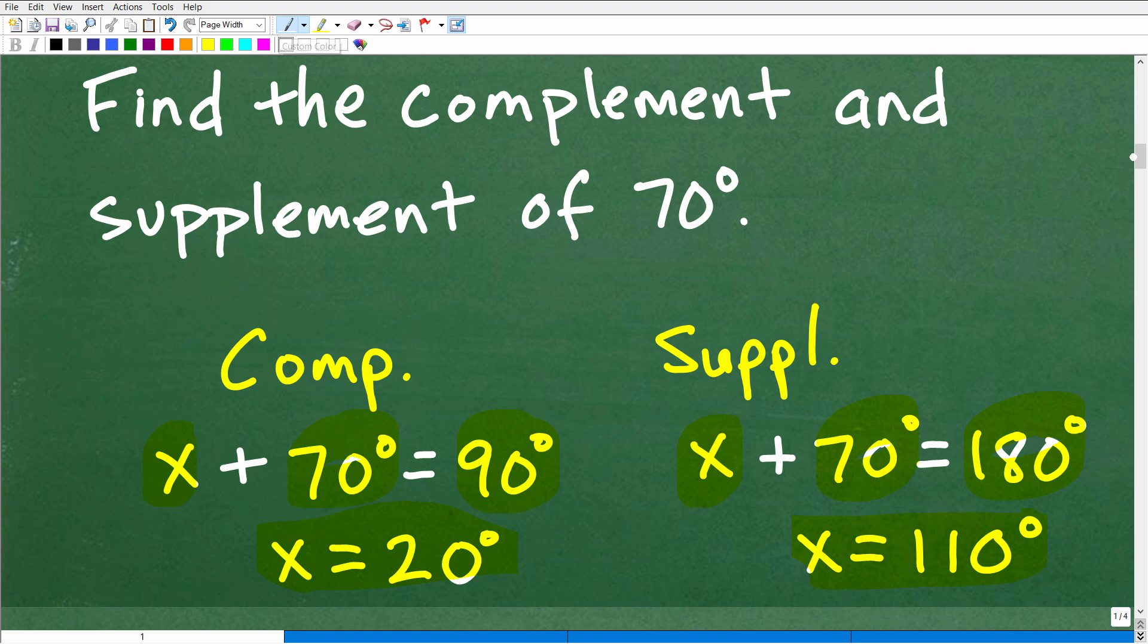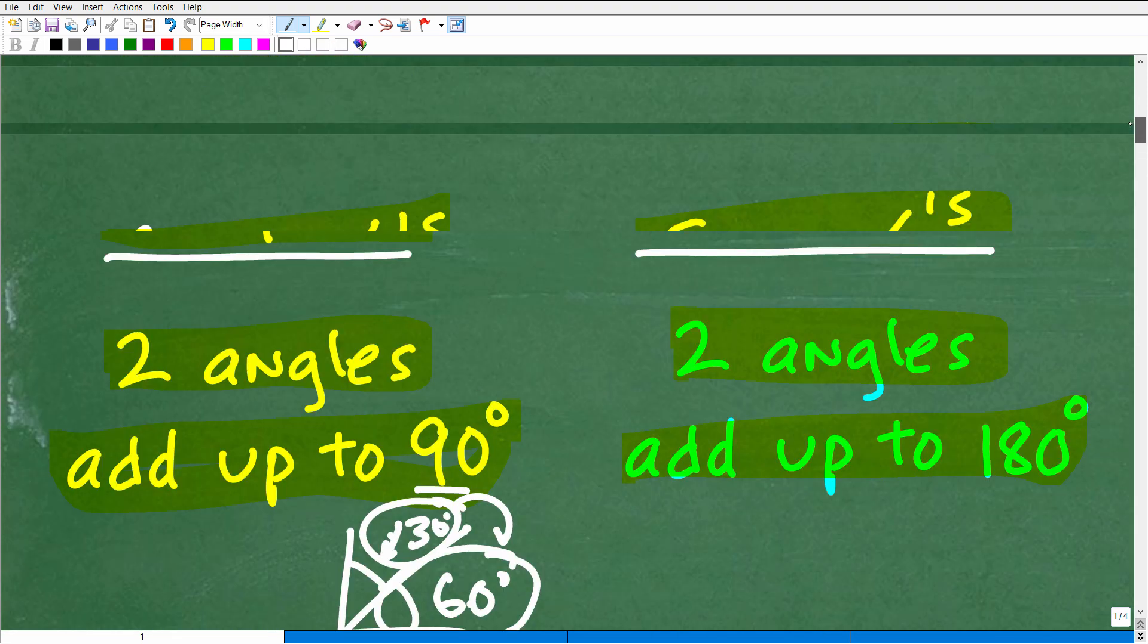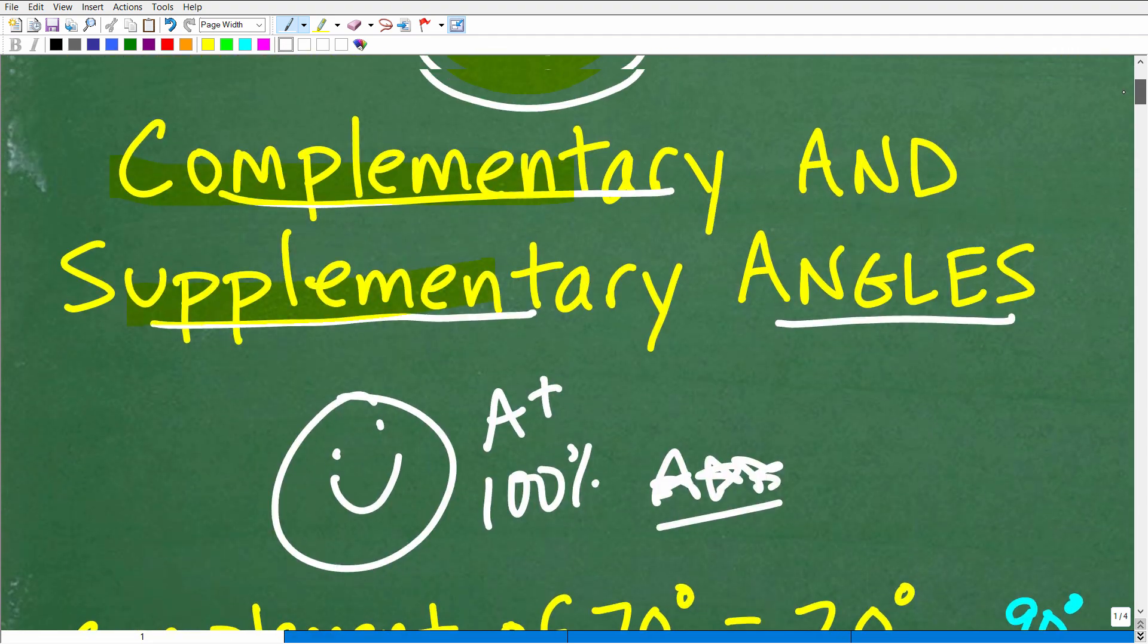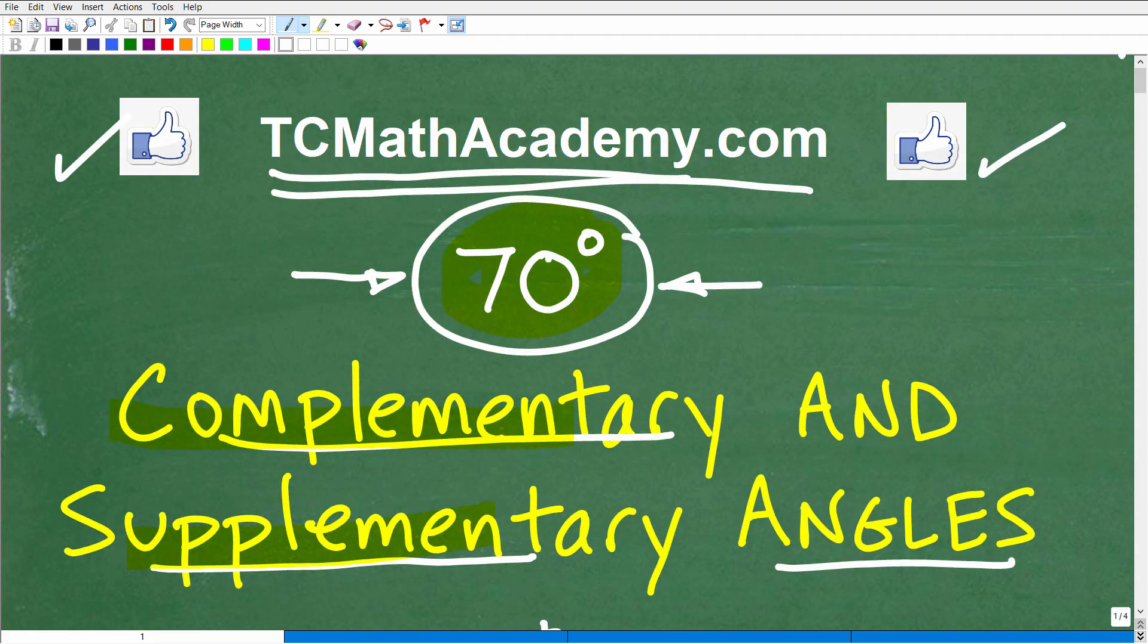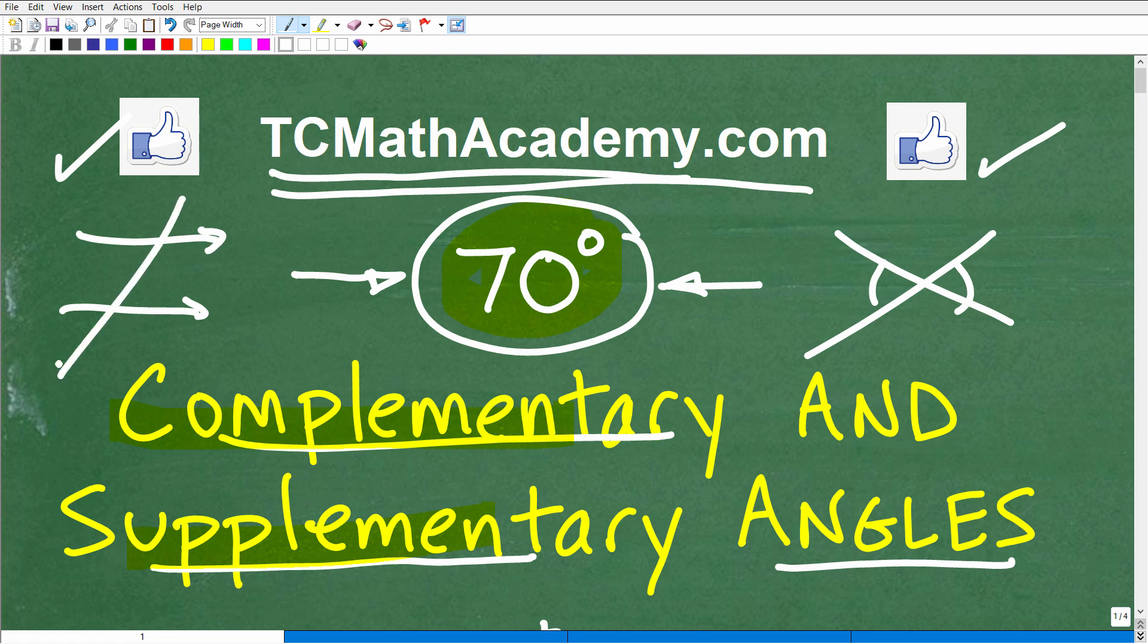All right, so real short video on complementary and supplementary angles. There are a lot of different types of angles in geometry. The very first basic type of angles you learn are complementary and supplementary angles. Then you can get into all kinds of good stuff like vertical angles. Then you start studying parallel lines and transversals. There's all kinds of fascinating angles in geometry.